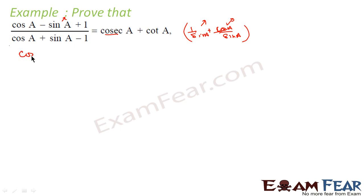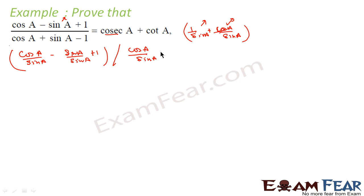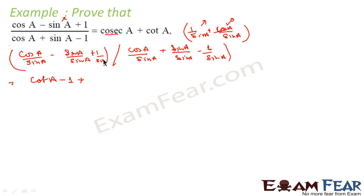So this becomes (cos A by sin A) minus (sin A by sin A) plus (1 by sin A), the whole thing divided by (cos A by sin A) plus (sin A by sin A) minus (cos A by sin A). That simplifies to (cot A minus 1 plus cosec A) divided by (cot A plus 1 minus cosec A). This is what we get.